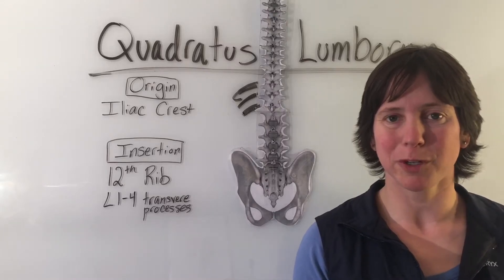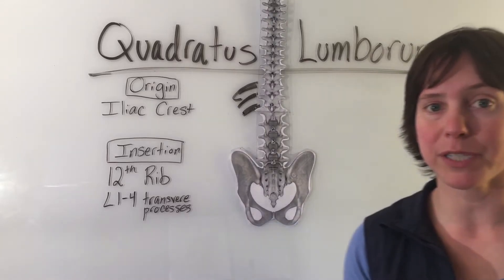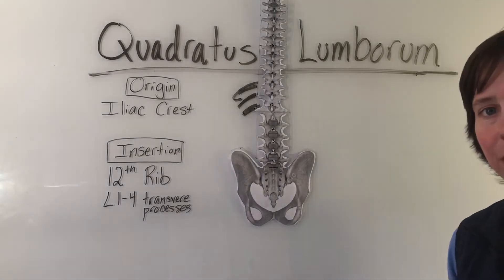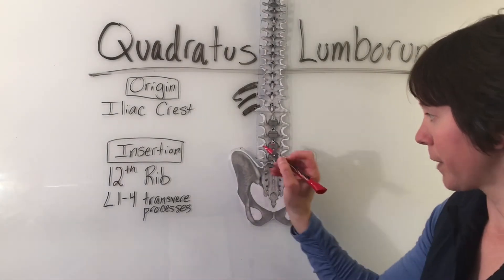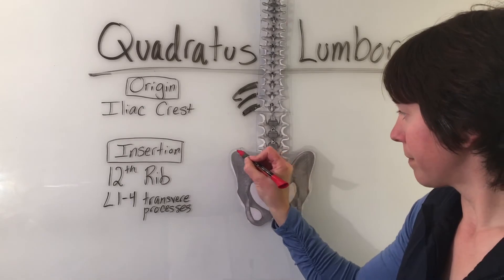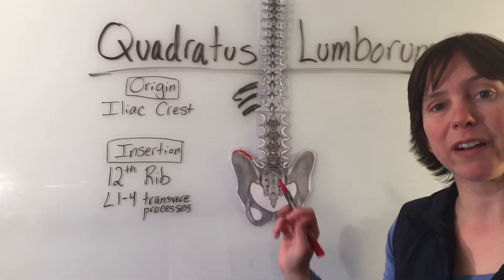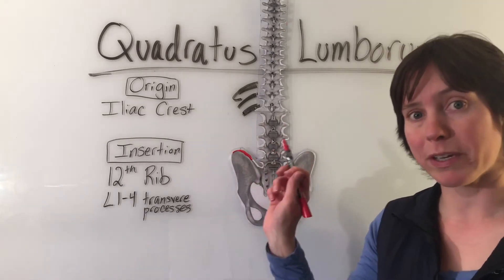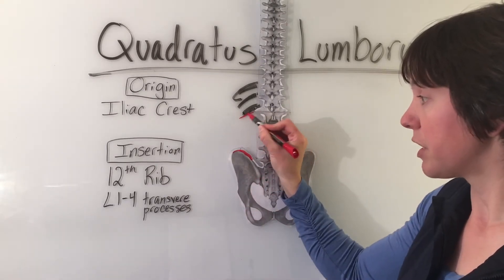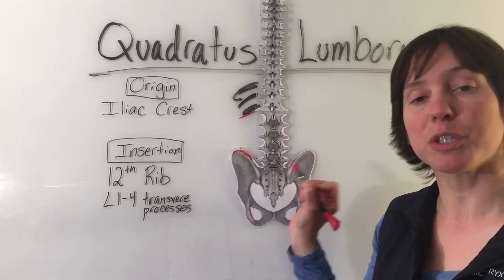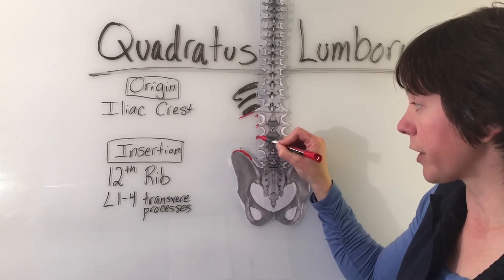The quadratus lumborum originates on the posterior medial side of the iliac crest. Here pictured is the posterior pelvis — this is where it originates — and then it will travel superiorly to insert on the 12th rib and the transverse processes of L1 through L4.